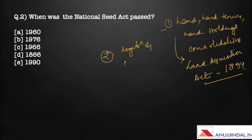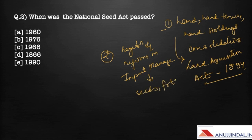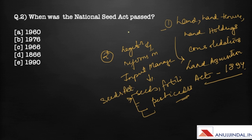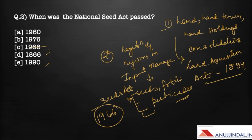The second category is legislations and reforms in input management, which covers seeds, fertilizers, and pesticides. The most important for seeds is the National Seed Act, which was passed in 1966. So the answer to the question — when was the National Seed Act passed — is 1966.